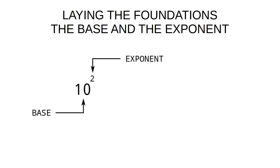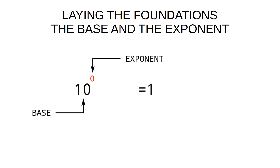Zero all the way through to F. A slightly trickier thing to work out is what's the exponent. The exponent is simply the number of times the base has been multiplied by itself. So in this case, we have a base of ten, and it's been multiplied by itself — ten times ten. So we have two tens multiplied by themselves to give a hundred.